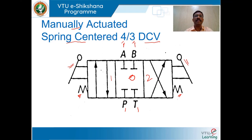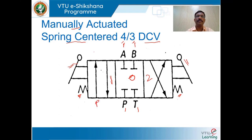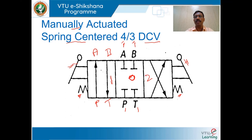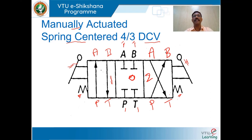When you operate the lever, the spool slides and shifts to position 1 — P connects to A and B connects to T. When you release the lever, opposing spring forces return the valve to position O. Operating the lever again shifts the valve to position 2 — this envelope configuration connects P with B and A with T. This is how to draw a symbol for a manually actuated spring-centered four-way three-position DCV.